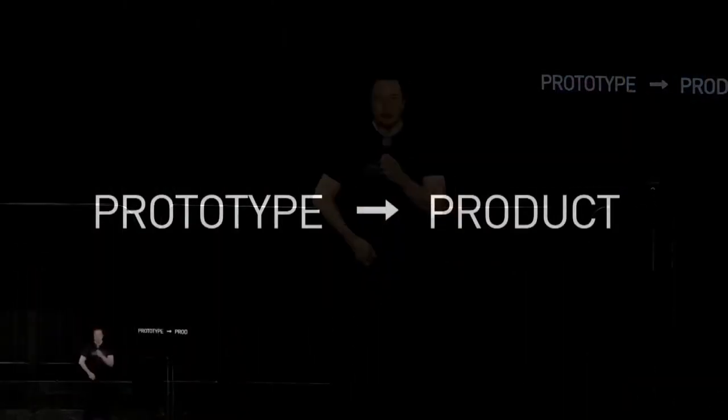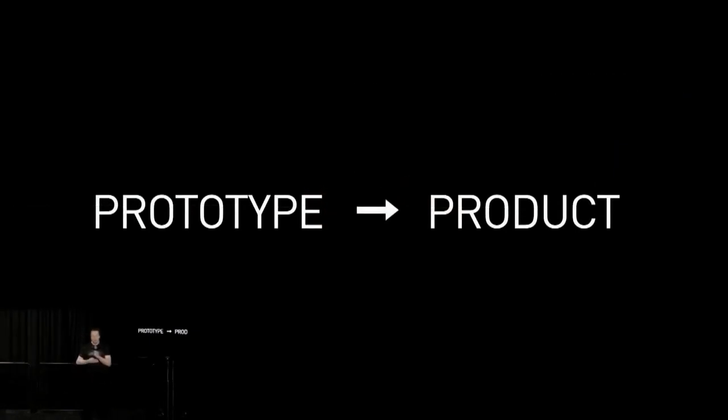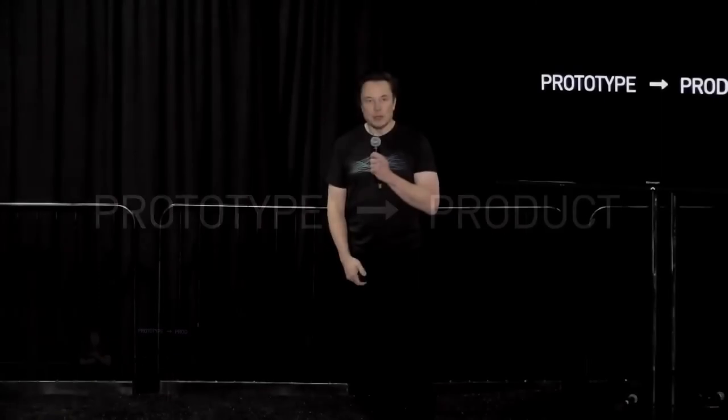So what we've been doing since then is we've been on the very difficult journey from prototype to product, but we've been working hard to be ready for our first human. And obviously we want to be extremely careful and certain that it will work well before putting a device in a human. But we've submitted most of our paperwork to the FDA and in about six months we should be able to have our first Neuralink in a human.